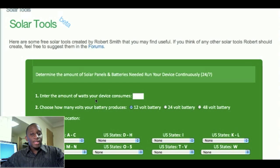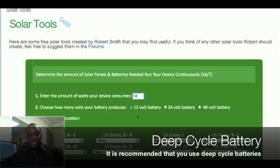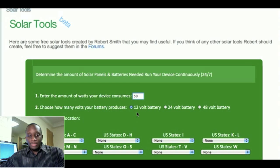And here it is straightforward. Enter the amount of watts your device consumes. So let's say we want to power our laptop for 24-7 and we know that our laptop uses let's say 50 watts. So just enter 50 here. You don't have to type 50 watts or anything other than the actual number. So just type in 50 there and then for the second step just choose how many volts your battery produces. So the average person is probably going to go with a 12 volt car battery. So you can just leave this option selected as 12 volt battery.